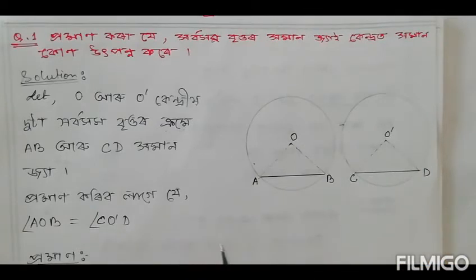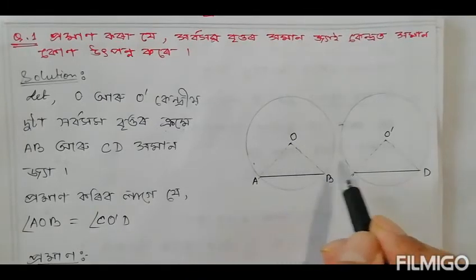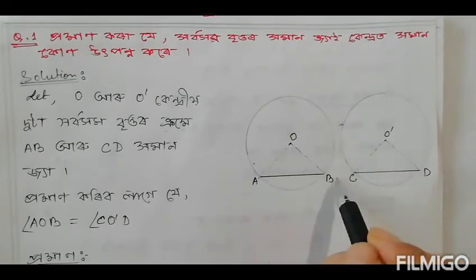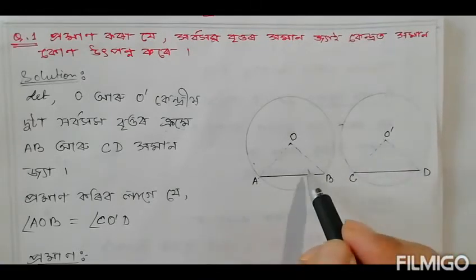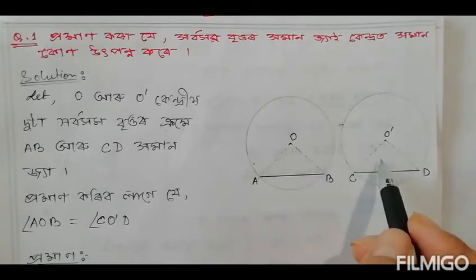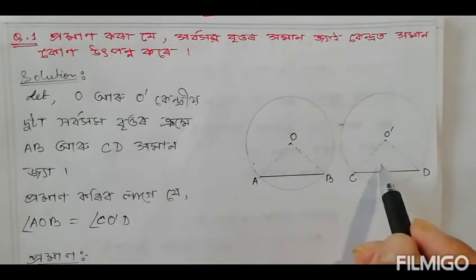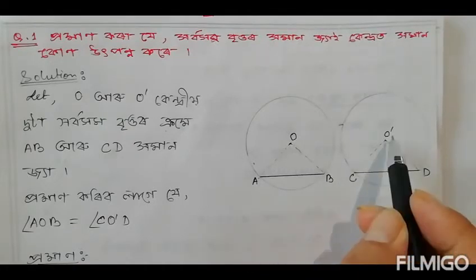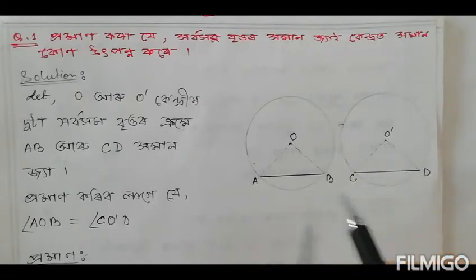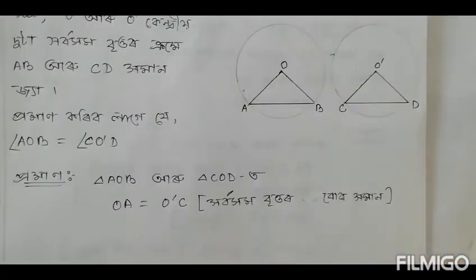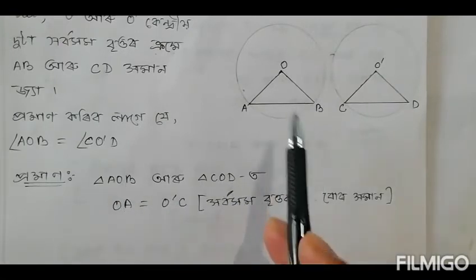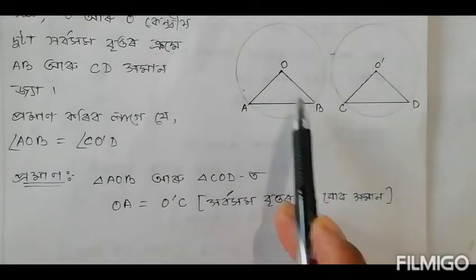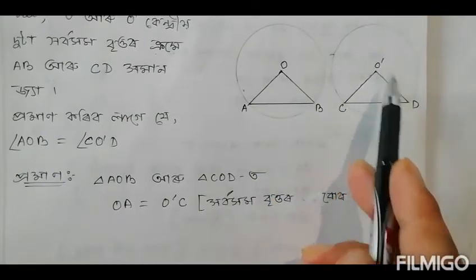We will also call it AOB and COD — AOB and COD. I will write the term A, O, B and C, O, D.